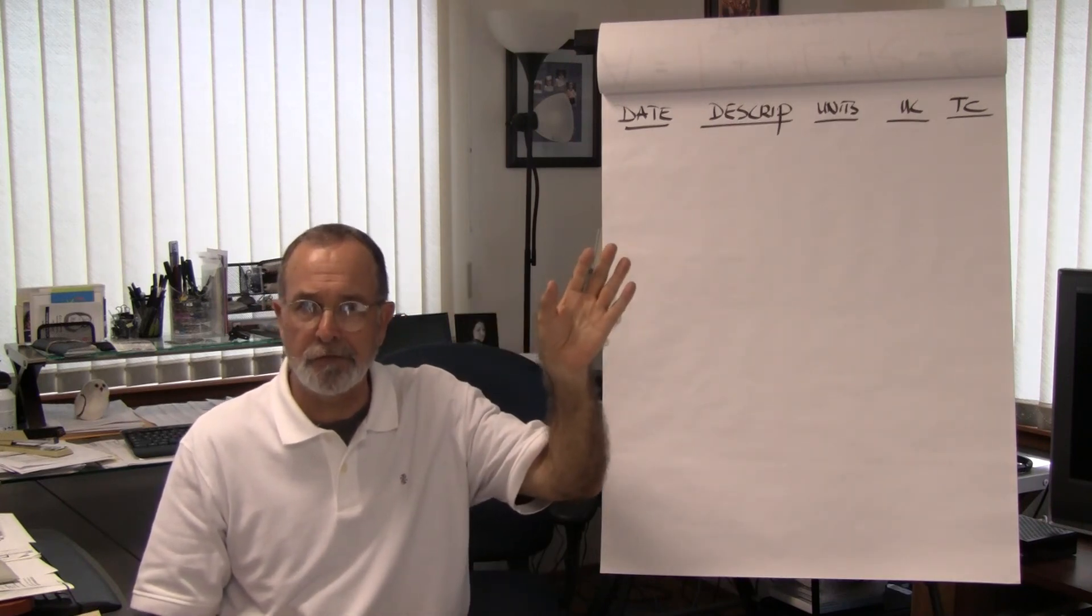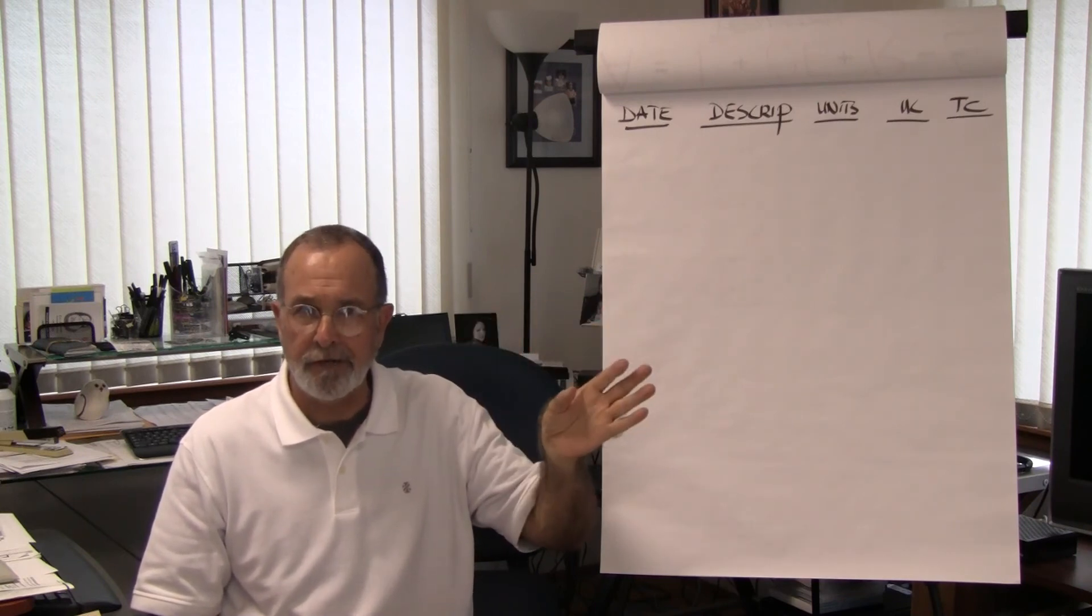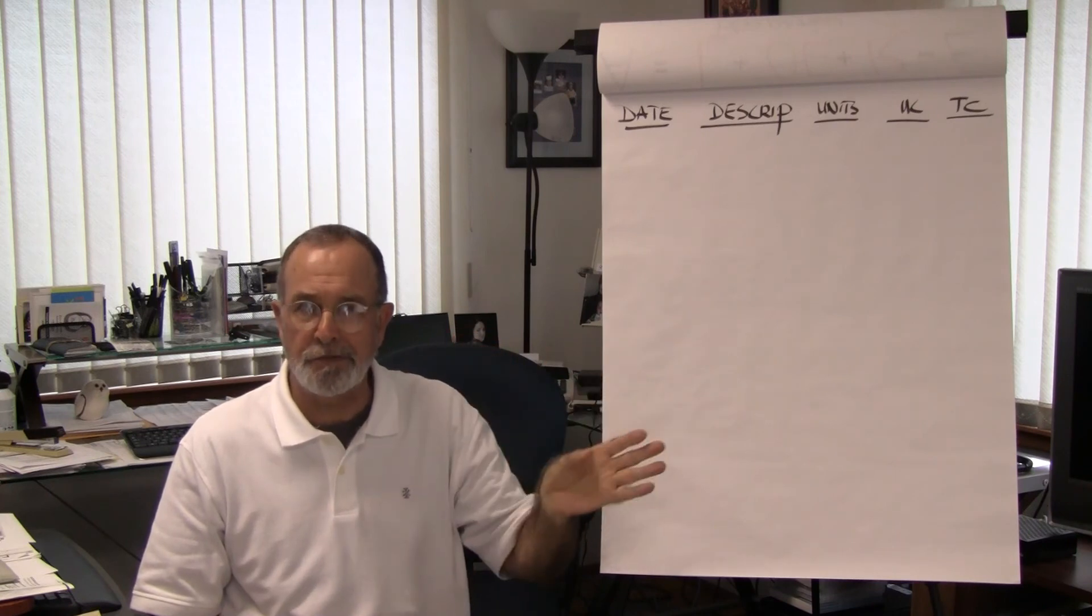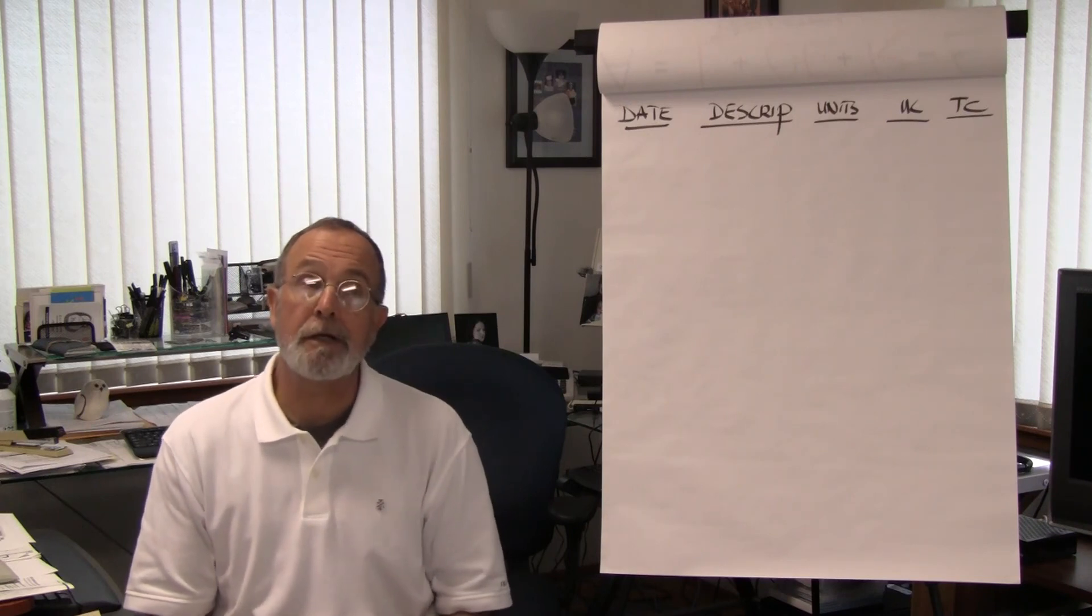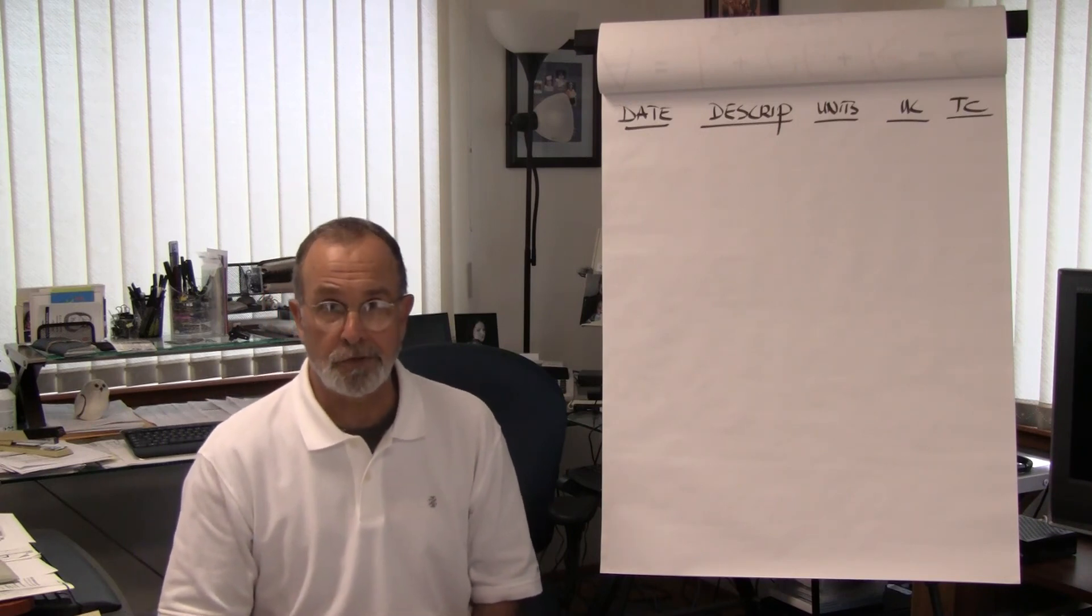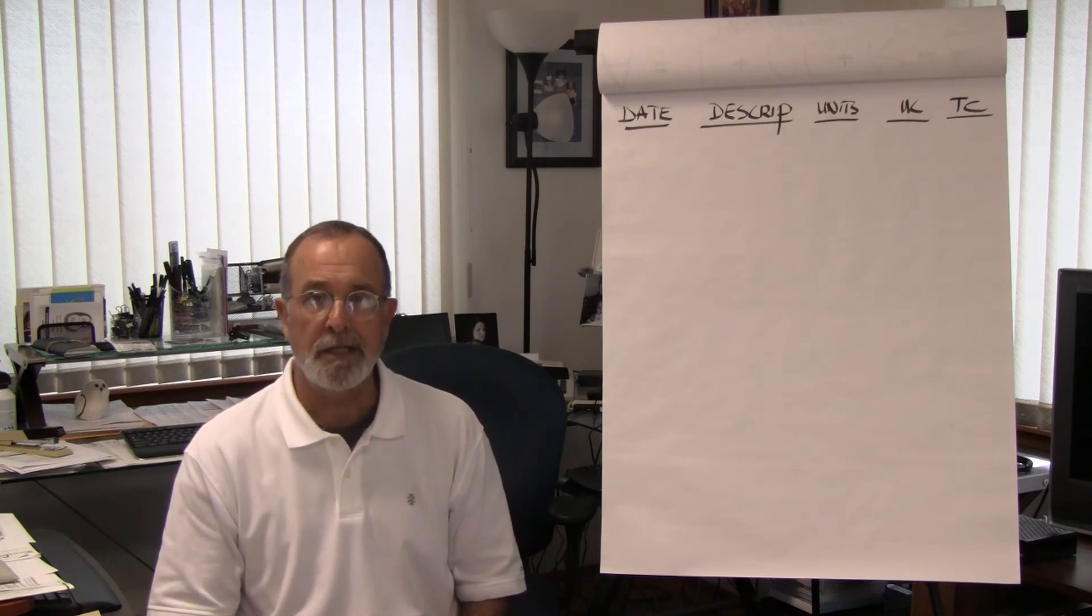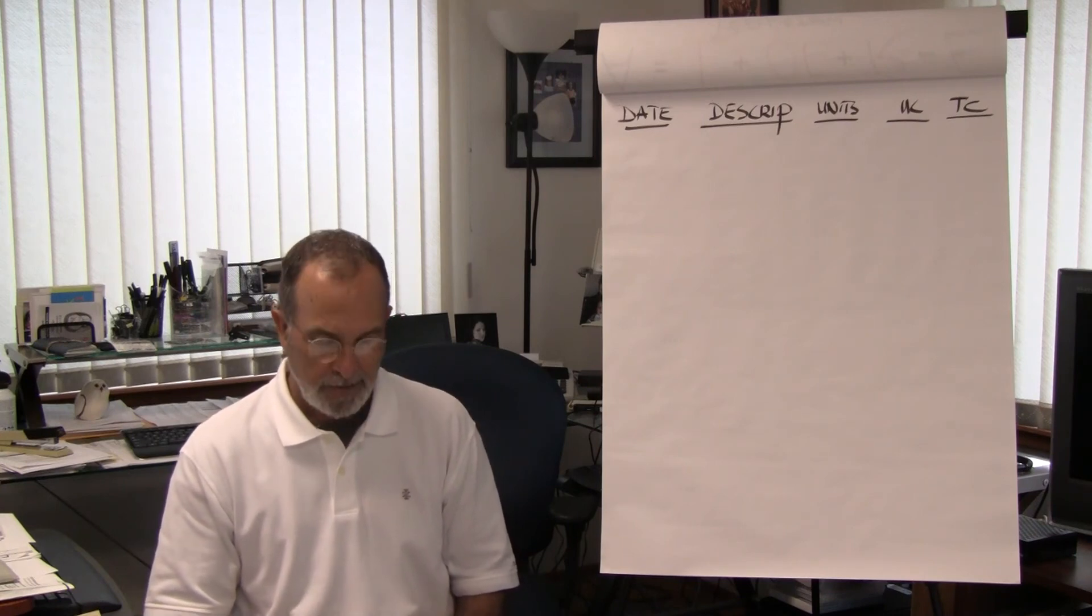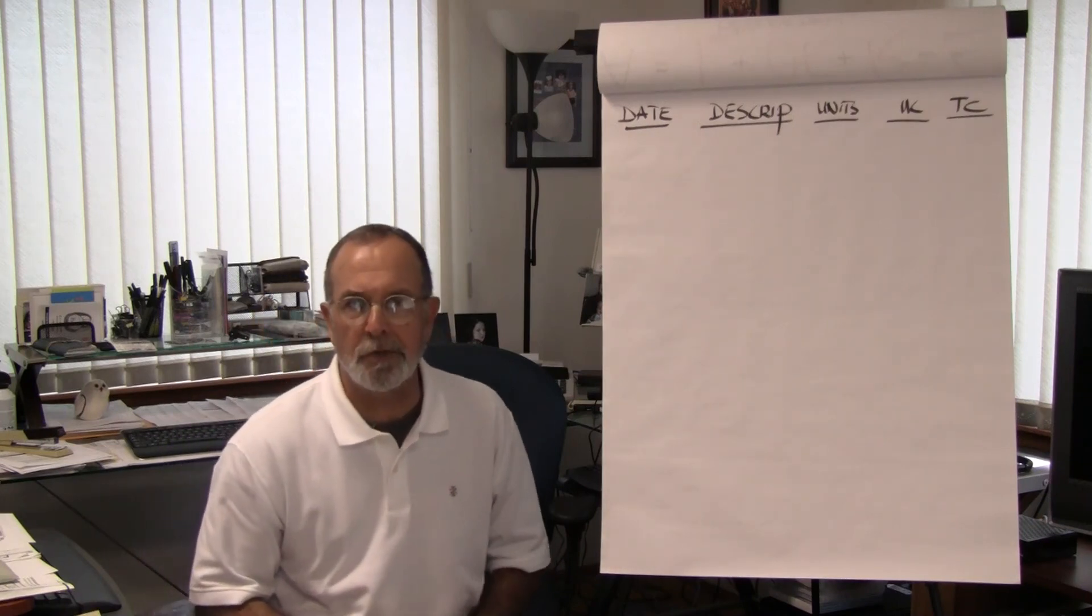FIFO, or first in, first out. LIFO, or last in, first out. Weighted average, or specific identification. Now, it's important to note that when we talk about cost flow assumptions, that's exactly what it is. It's an assumption about the way inventory cost is moving in the business. And I think the best way to illustrate that is to work through one of these exercises.